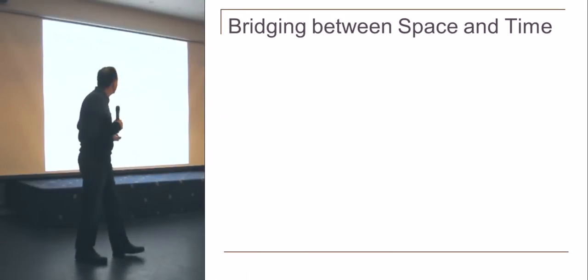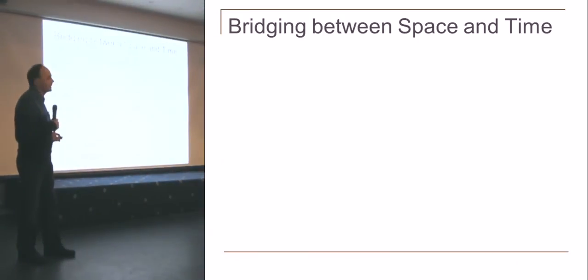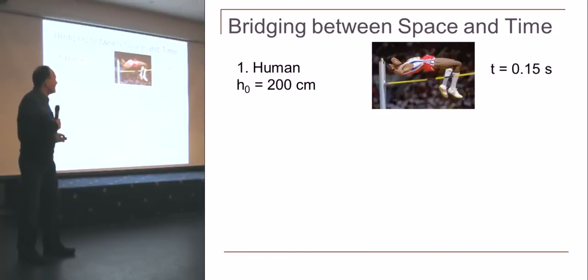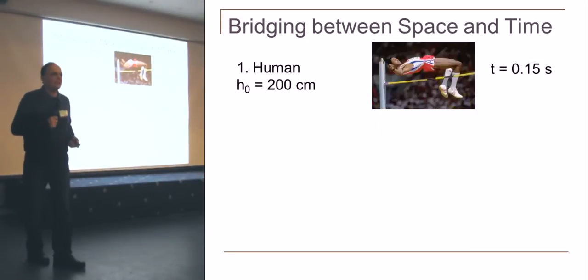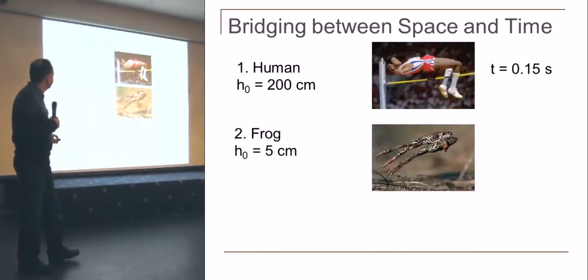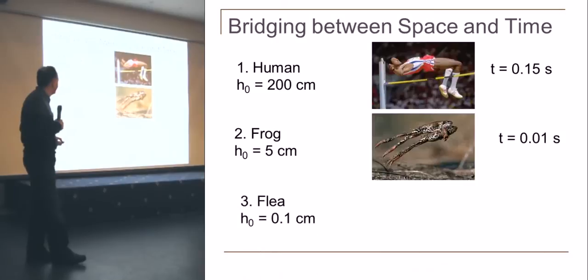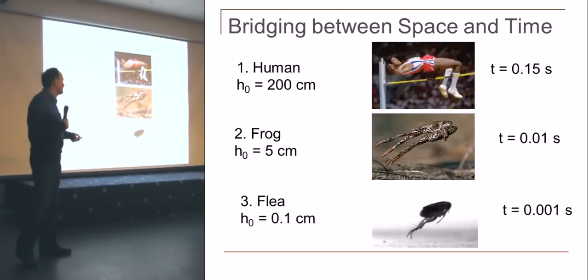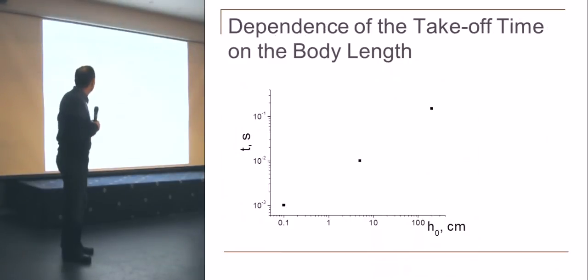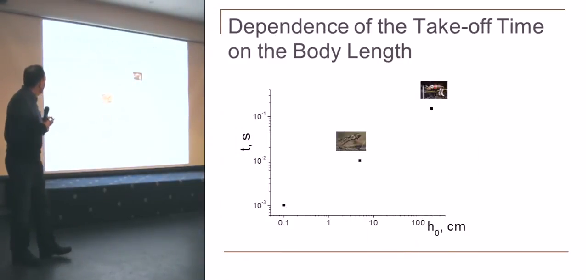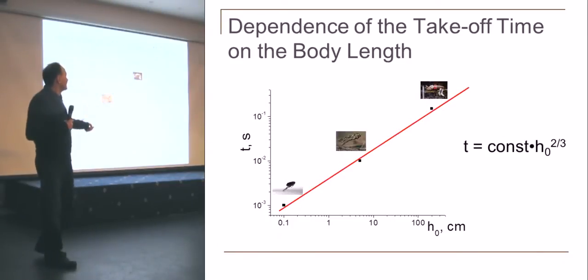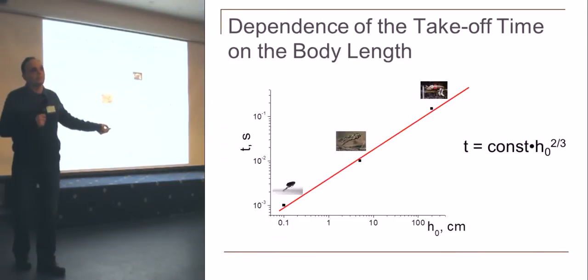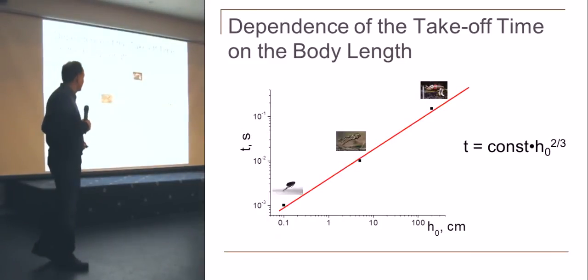From every theory of this kind, we must build a bridging between space and time. What we have here? Here we have a human, here is his jump, and the takeoff time, the time for pushing, which is 0.15 seconds. I will put data for a frog, the time is 10 milliseconds, and for a flea, for which the time is 1 millisecond. Let's now plot it again. Here is the human, the frog, and the flea in the log-log scale, and here is again this line. I'm not surprised that the dependence is the same power dependence, minus two thirds.